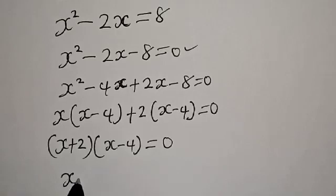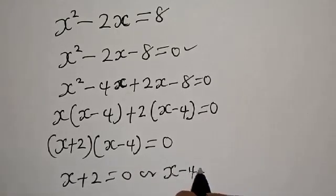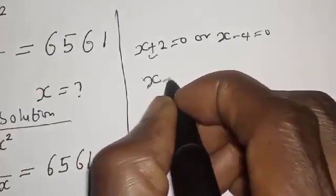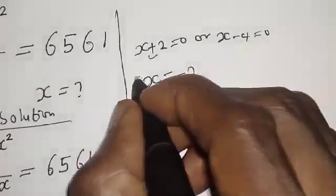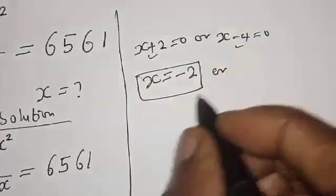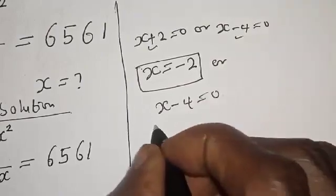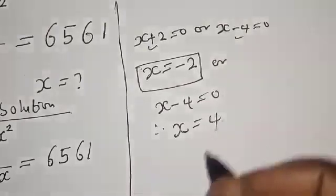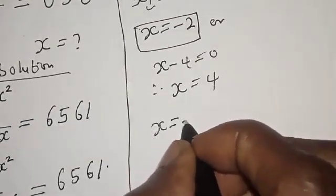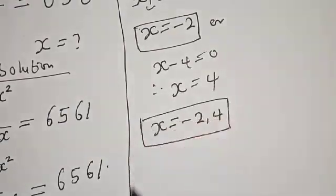Setting each factor to zero: s plus 2 equals 0, or s minus 4 equals 0. From the first, s equals minus 2. From the second, s equals 4. Therefore, the final answer is s equals minus 2 and s equals 4. Let's check to confirm if our answers are correct.